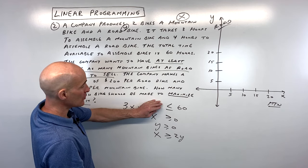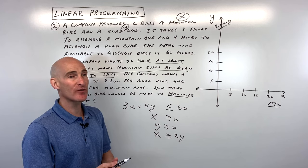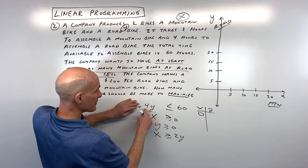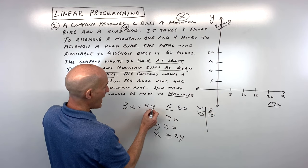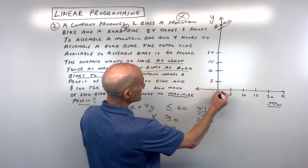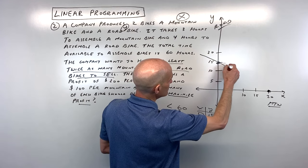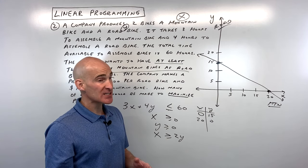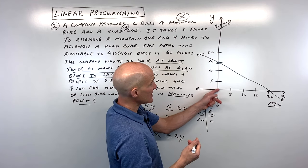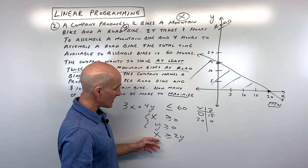For 3x + 4y ≤ 60, I'll use the intercept method. If x is 0, divide by 4 — y is 15. If y is 0, divide by 3 — x is 20. So we plot (0, 15) and (20, 0) and draw a solid line since it's equal to. Testing the origin (0, 0): is 0 ≤ 60? Yes. So we shade on that side of the line, and we're in the first quadrant because of the x ≥ 0 and y ≥ 0 constraints.